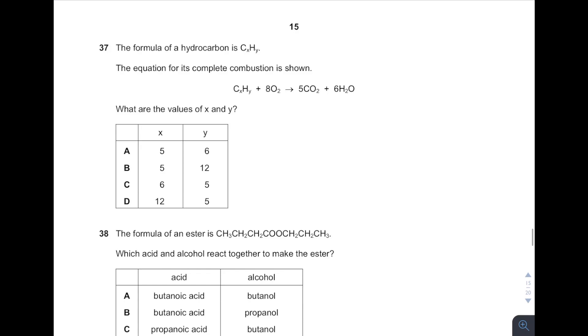And then 37, balance the equation. Right-hand side, how many carbon? 5 multiplied by 1, you get 5. So left-hand side, you need 5 carbon, so it has to be C5. Right-hand side, how many hydrogen? 6 multiplied by 2, you get 12. So H12. Answer 37 is B.